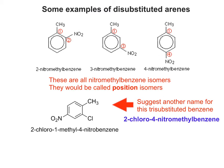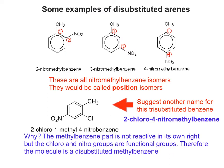Did you come up with 2-chloro-4-nitro-methylbenzene? The way to think about it is that the methylbenzene part is not really reactive in its own right, but the chloro and nitro groups are functional groups because they bring new chemistry to the molecule. Therefore, this molecule is a disubstituted methylbenzene. You start the numbering by putting carbon number 1 where the methyl group is situated, then count clockwise to give the smallest possible numbers - 2 and 4.